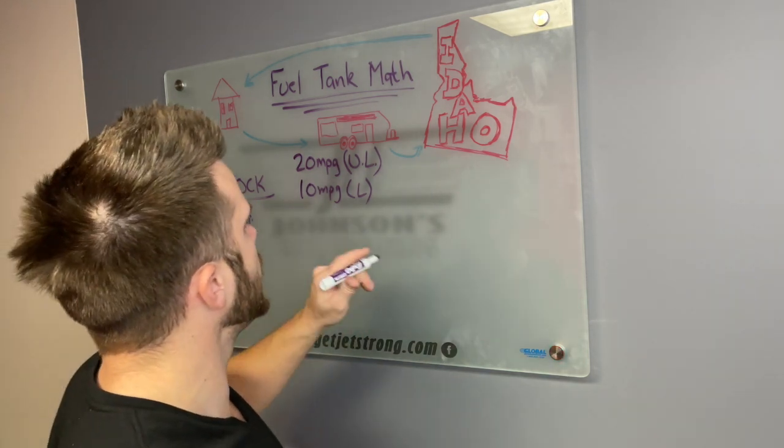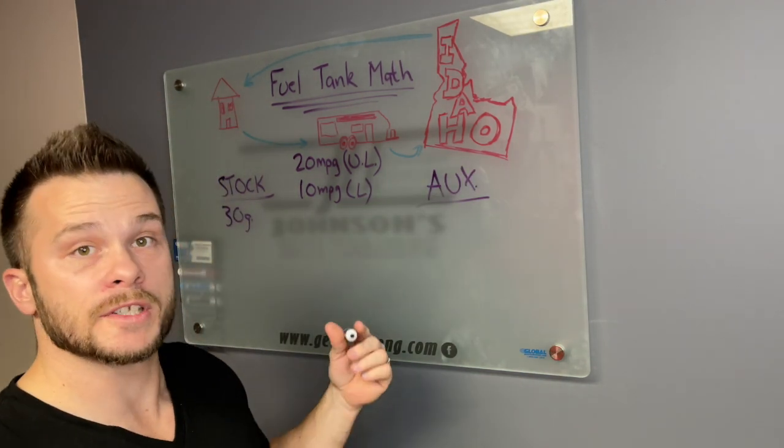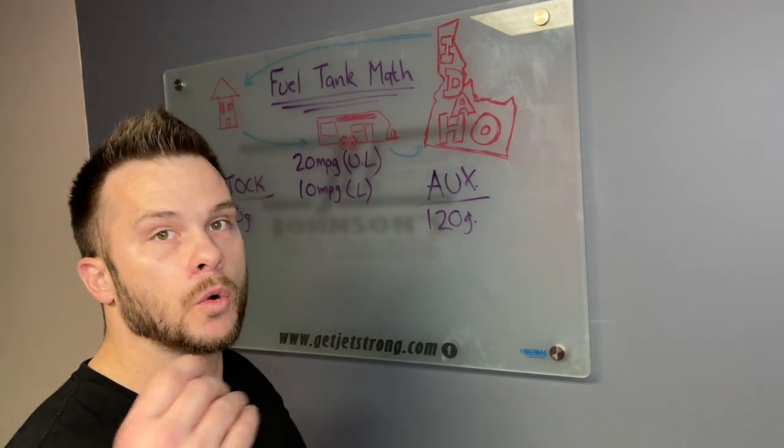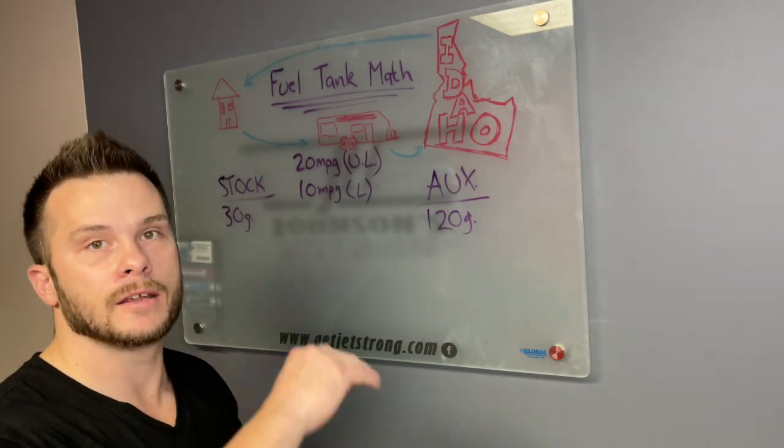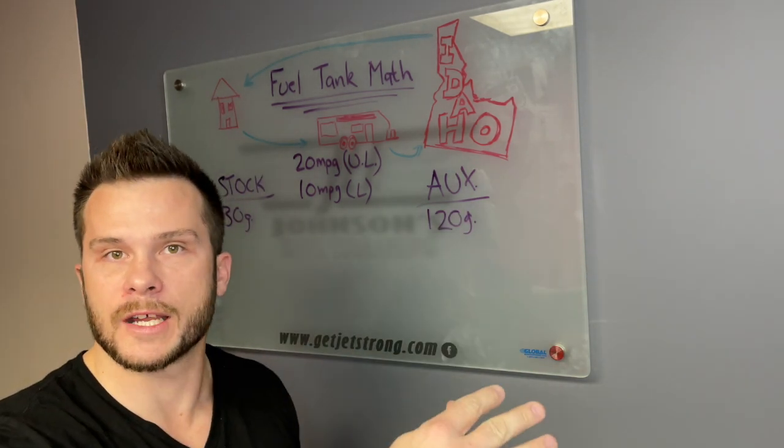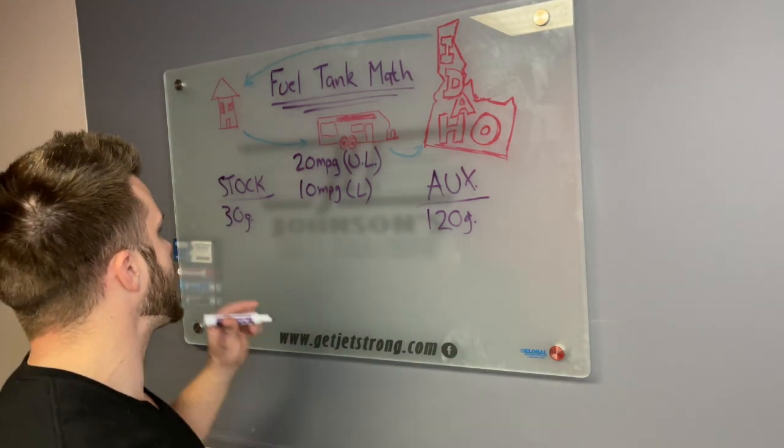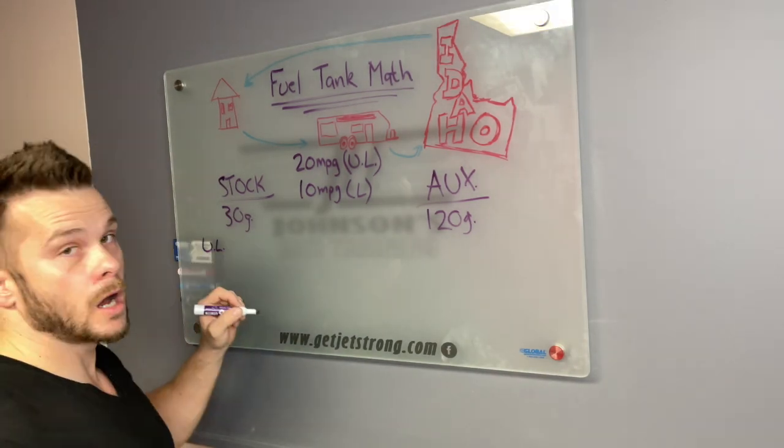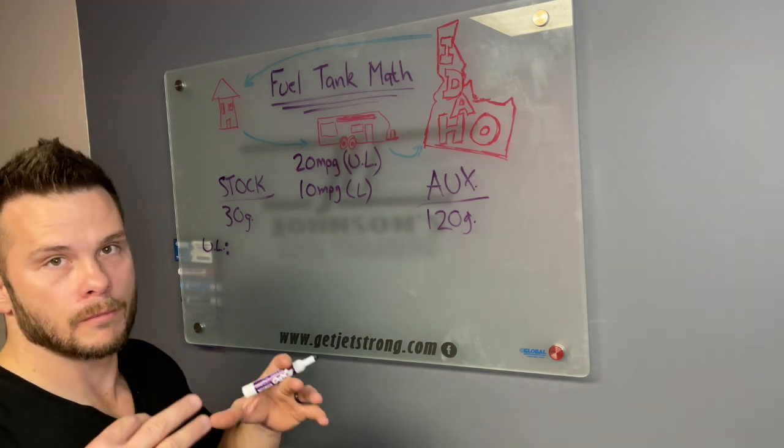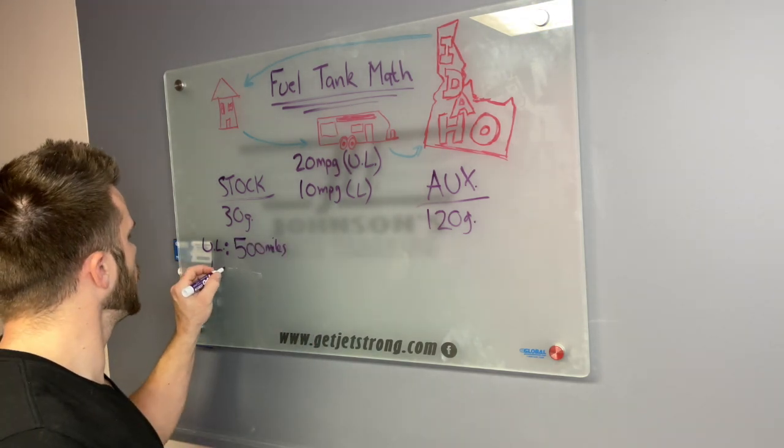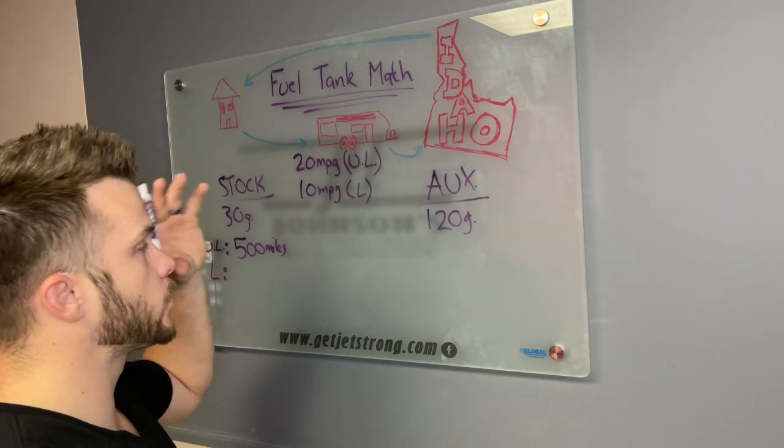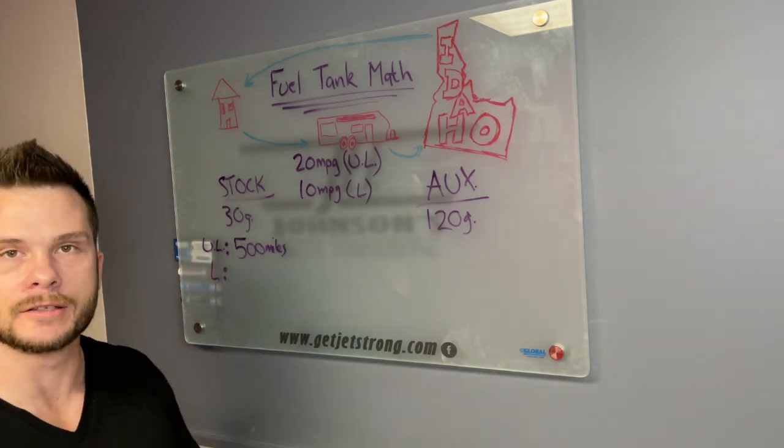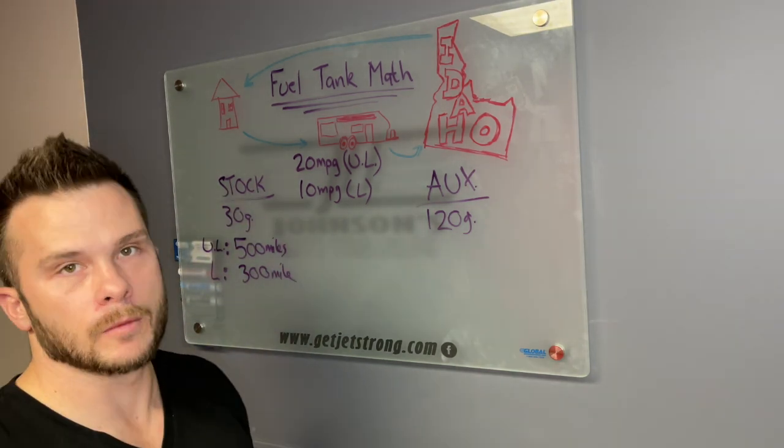With the stock setup, unloaded we're at a 500 mile radius, and when we're loaded, getting 10 miles a gallon with 30 gallons for a fuel tank, we're getting 300 miles.